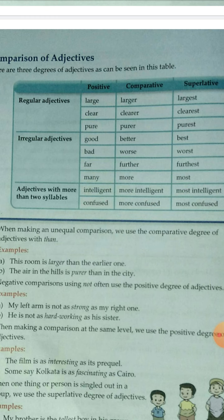Adjectives with more than two syllables — here syllables refers to vowel sounds. For example, 'large', 'clear', and 'pure' have one or two vowel sounds, and 'good' and 'bad' have one vowel sound. But a word like 'intelligent' has more than two syllable sounds. These adjectives do not end with '-er' or '-est'; instead, in the comparative degree we add 'more', and in the superlative degree we use 'most'. For example: intelligent, more intelligent, most intelligent.